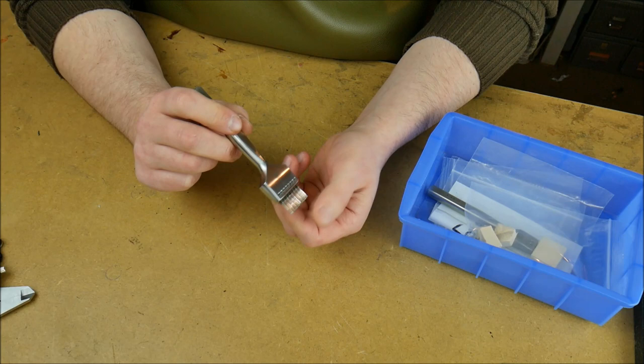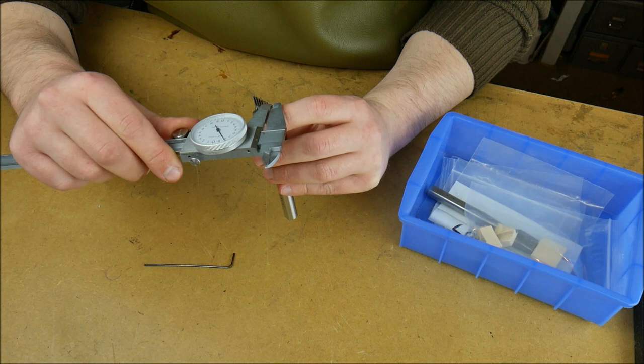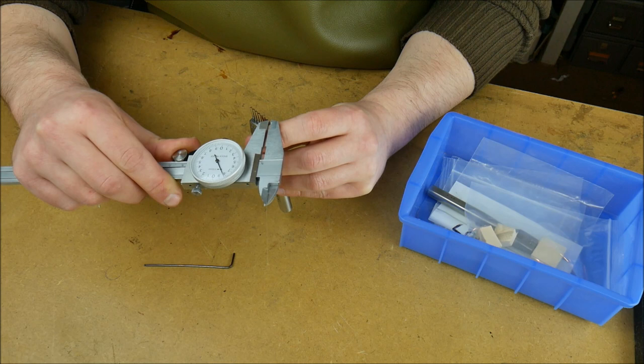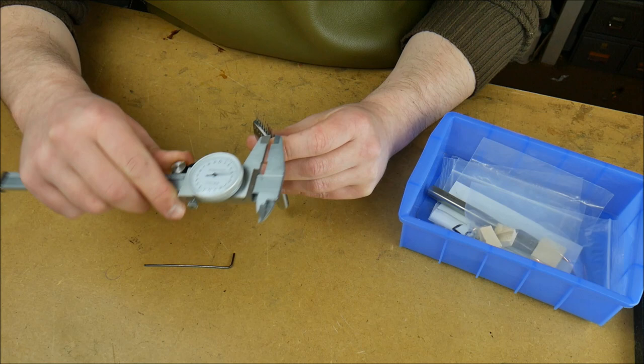Now the width of the prongs on this particular model which is the 3.38, we are looking at 1.8 millimeters right at the tip. So it's rather thin. If I bring it further up say 8 millimeters further up it is also 1.8 millimeters. So it doesn't taper width-wise.